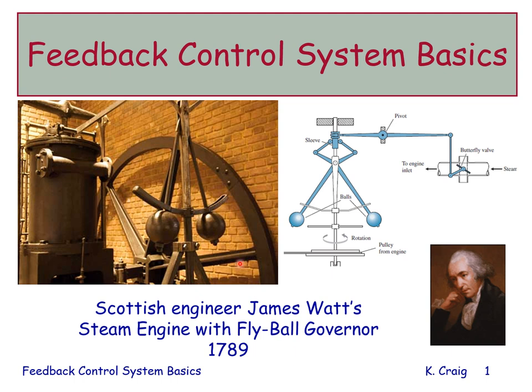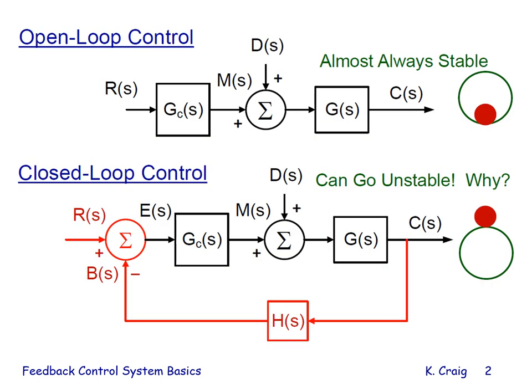We see a picture of the invention along with a schematic. Two questions come to mind: what is feedback control, and why is this an example of feedback control? To answer the first question, I show two block diagrams. The top diagram is an open-loop control system. The bottom block diagram is a closed-loop or feedback control system.